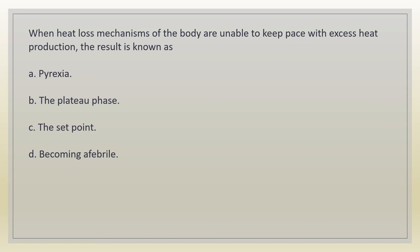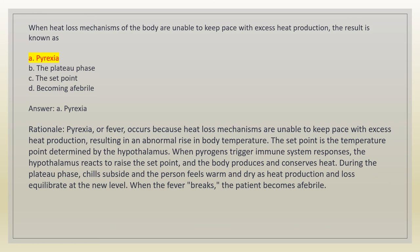When heat loss mechanisms of the body are unable to keep pace with excess heat production, the result is known as: A. pyrexia. B. the plateau phase. C. the set point. D. becoming afebrile. Answer: A. Pyrexia. Rationale: pyrexia or fever occurs because heat loss mechanisms are unable to keep pace with excess heat production, resulting in an abnormal rise in body temperature. The set point is determined by the hypothalamus. During the plateau phase, chills subside and the person feels warm and dry. When the fever breaks, the patient becomes afebrile.